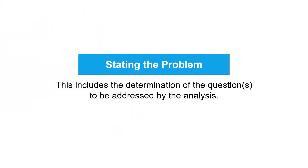Let's first discuss the first step: stating the problem. Regression analysis usually starts with a formulation of the problem. This includes the determination of the questions to be addressed by the analysis. The problem statement is the first and perhaps the most important step in regression analysis. It is important because an ill-defined problem or a misformulated question can lead to wasted effort, the selection of an irrelevant set of variables, or a wrong choice of the statistical method of analysis. A question that is not carefully formulated can also lead to the wrong choice of a model.